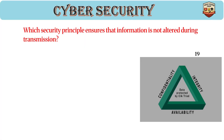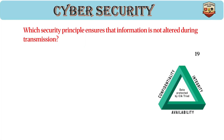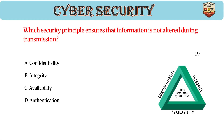Which security principle ensures that information is not altered during transmission? Answer: B, integrity. Integrity ensures data remains unmodified, achieved via hashing and digital signatures, and prevents tampering and corruption.